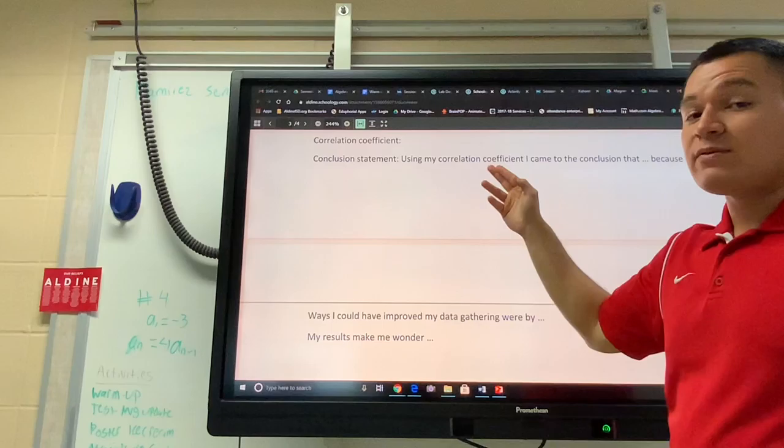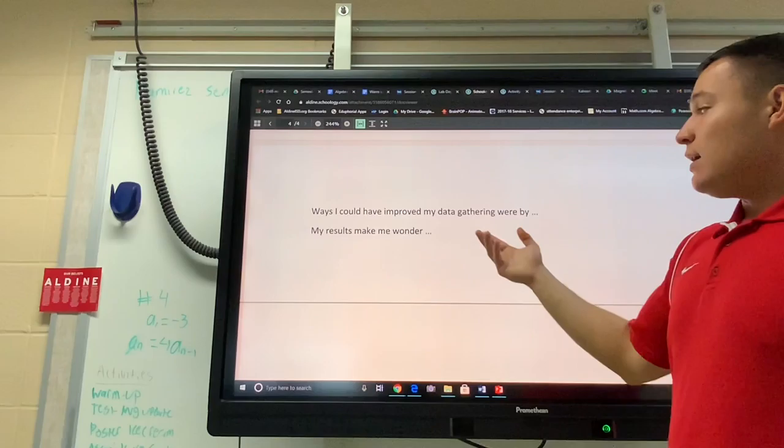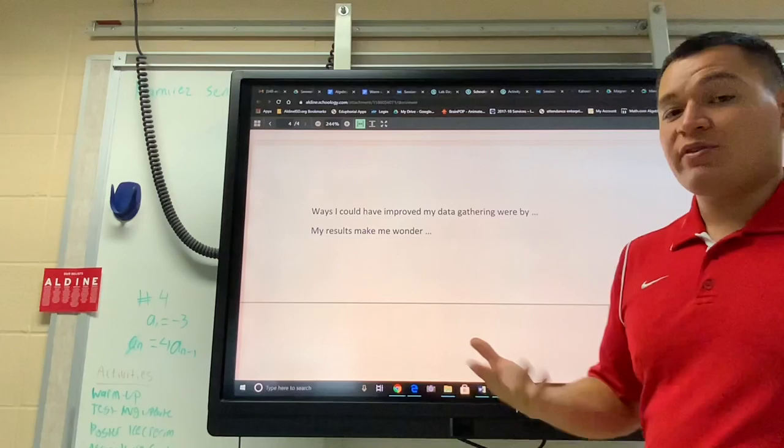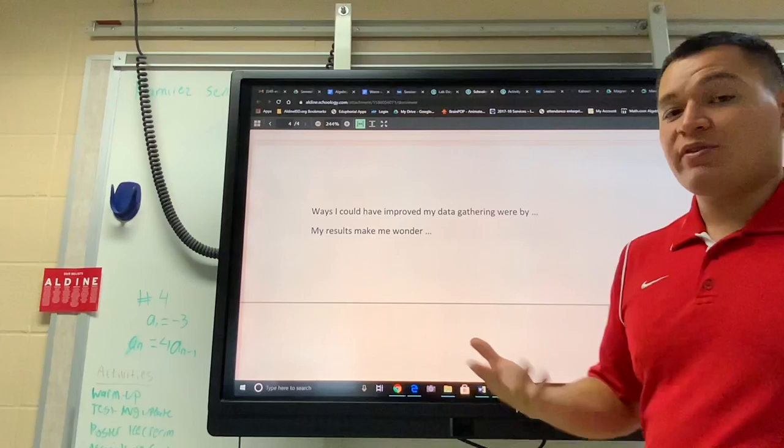Finally, you're going to answer a few questions. You're going to interpret your correlation coefficient and make a concluding statement about the relationship between those items. And you're also going to say how you can improve this lab, what you could have done better, what you learned from your mistakes, like I learned I don't want to use a roll of tape for measuring bounce height.